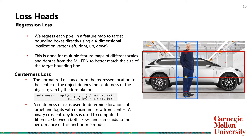A third head called the centerness head has been added in this model. This is a measure of centerness of the positive sample location inside the bounding box. A centerness mask finds the location of target logits with maximum skew from center. I will now hand the presentation back to Shairi.